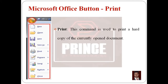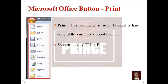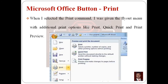The next command is Print. If we want to print a document, we use this command to produce a hard copy. This command is used to print a hard copy of the currently open document. The shortcut key is Ctrl+P. When you select the Print command, a fly-out menu appears with additional options including Quick Print, Print, and Print Preview.